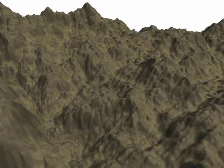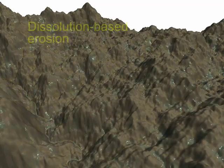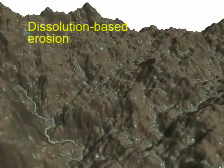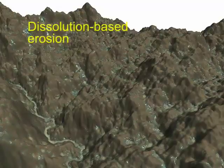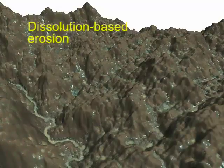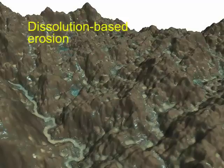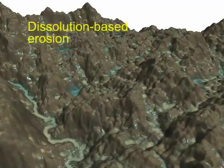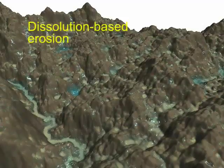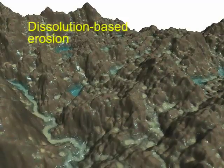The dissolution erosion is suitable for static or slowly moving water. The following images show how this erosion forms river paths in the valleys.